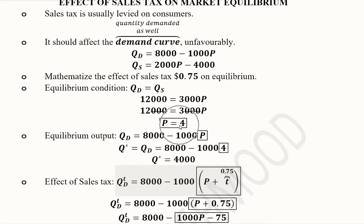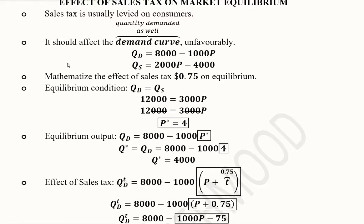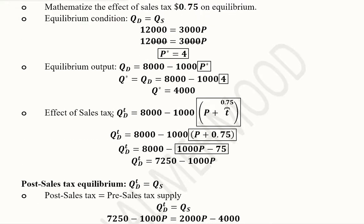Now we have the equilibrium price p equal to 4. The equilibrium output can be found simply by substituting this equilibrium price value into the equation. After substitution and simplification, the equilibrium output is 4000 in this case.